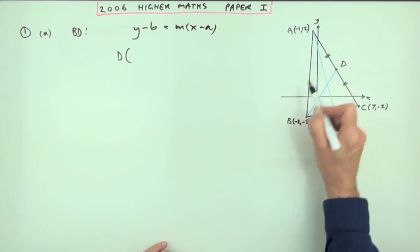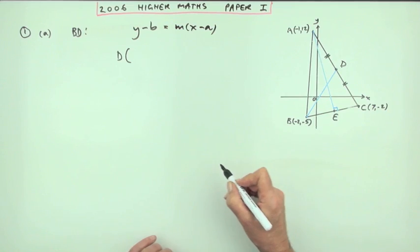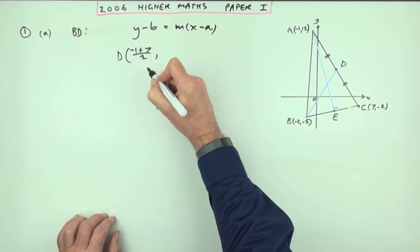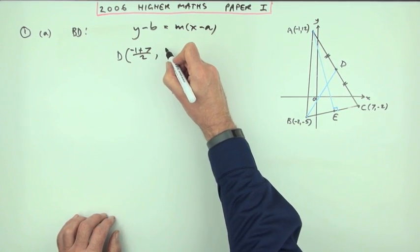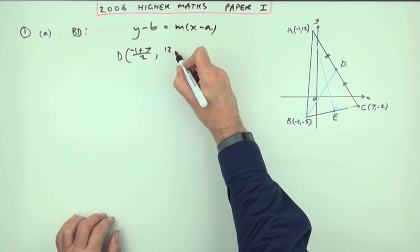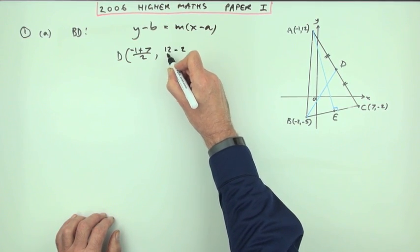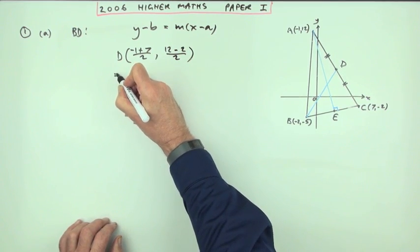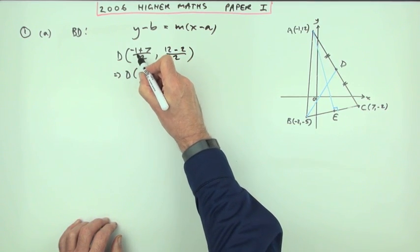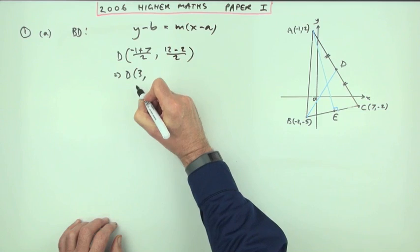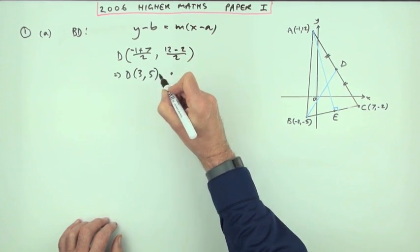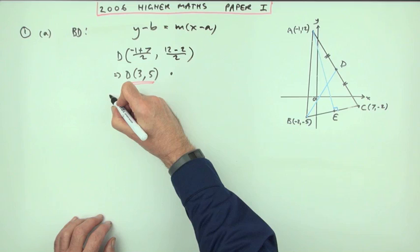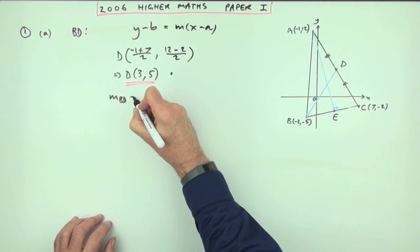D is the midpoint of AC, so it's halfway between negative 1 and 7, and halfway between negative 2 and 12. Halfway between negative 1 and 7: that's 6 divided by 2 equals 3. Halfway between 12 and negative 2: that's 10 divided by 2 equals 5. So D is the point (3, 5) — that's the first mark.